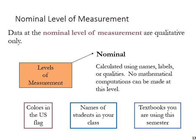Examples of nominal level data are colors in the US flag, names of students in a class, or textbooks that are assigned this semester.